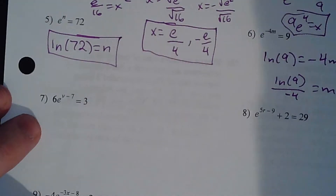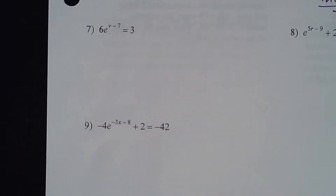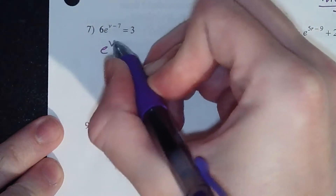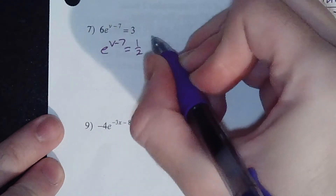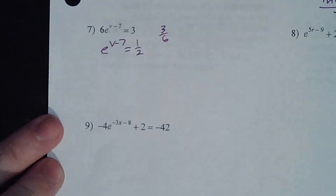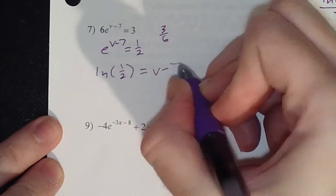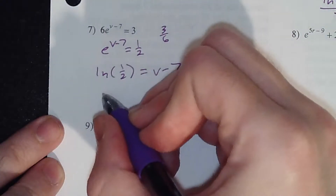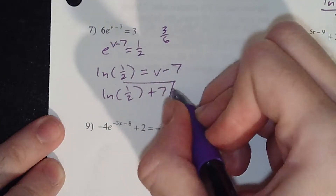Number 7: you can't do your log loop until you've gotten the e part by itself. So we're going to divide both sides by 6 first. 3 divided by 6 is 1 half. Log loop: LN of 1 half is the exponent, which is v minus 7. Add 7 to both sides and now that equals v.